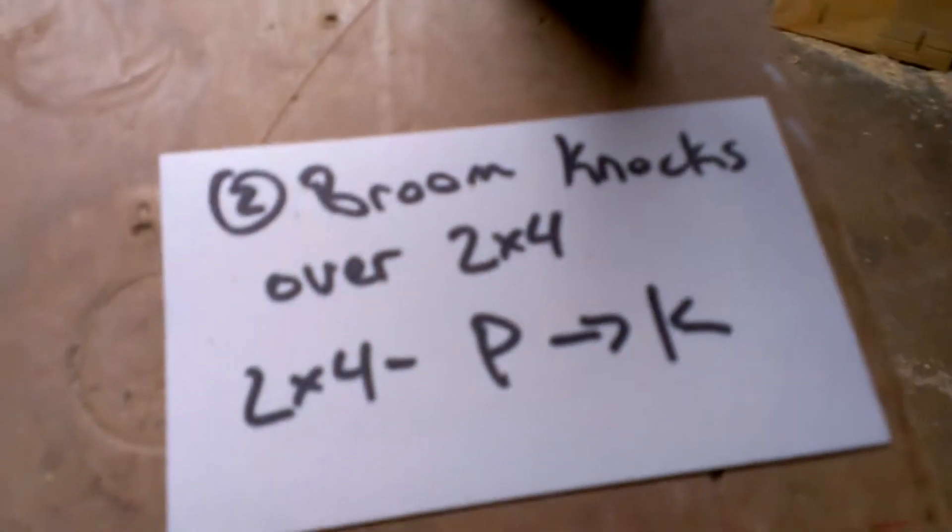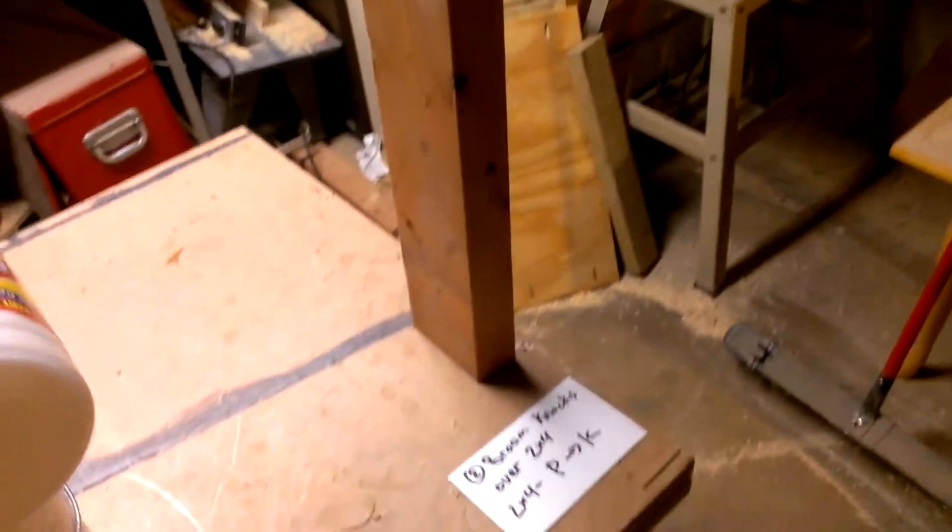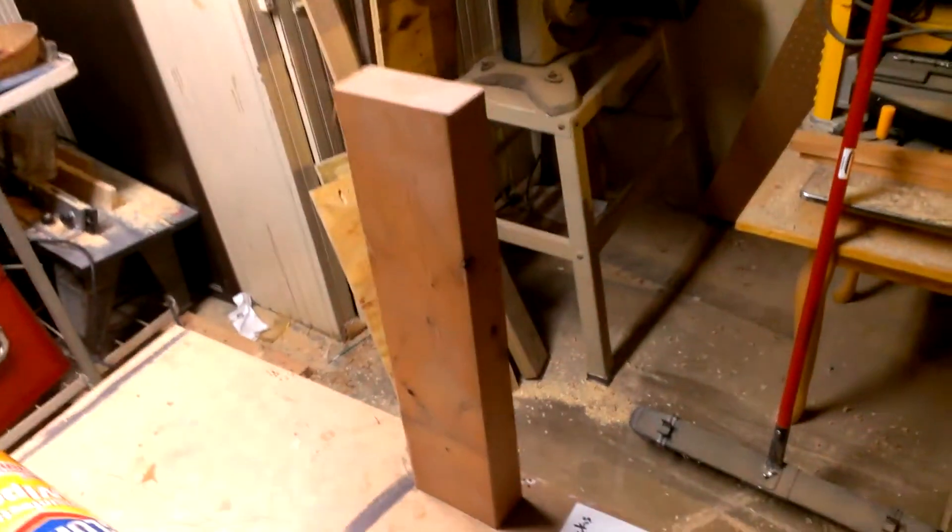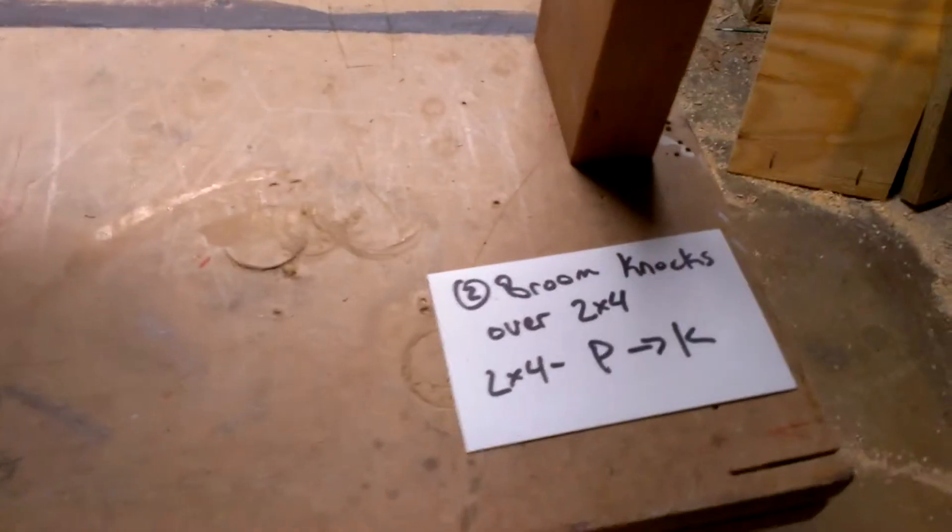The broom falling over should hit this 2x4. This 2x4 currently has some potential energy. It's not moving and it is also balanced so that there's a lot of mass up here off the table. So that will have potential to kinetic energy transfer. All this potential energy will start to fall over and that will bring the 2x4 down.